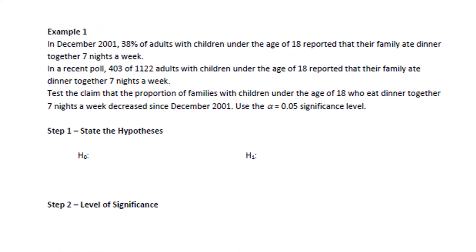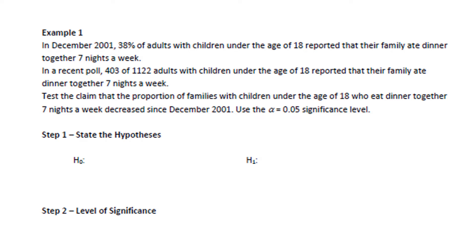Here's our first example. In December 2001, 38% of adults with children under the age of 18 reported that their family ate dinner together seven nights a week. In a recent poll, 403 of 1,122 adults with children under the age of 18 reported the same. Test the claim that the proportion who eat dinner together seven nights a week decreased since December 2001, using the alpha equals 0.05 level of significance. This is a one proportion test because we're comparing a proportion to a percent — 38% was the number in 2001 — so the null hypothesis is P equals 0.38.